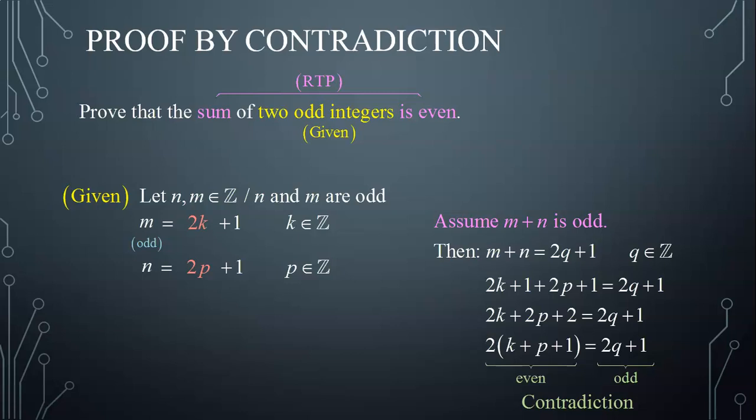Having reached a contradiction, I deduce my assumption was wrong, therefore m plus n is even.